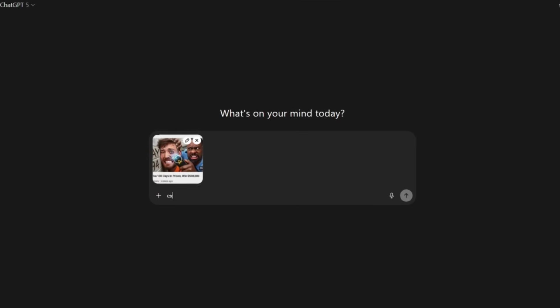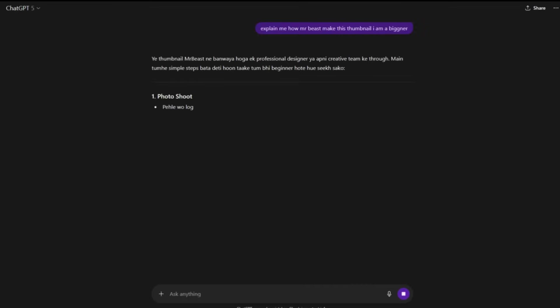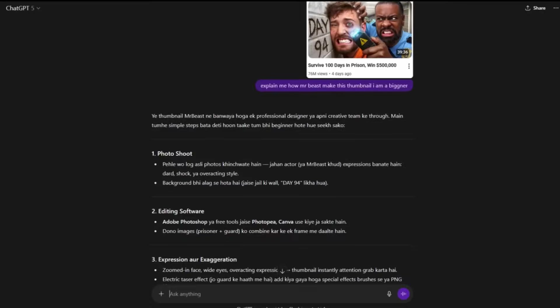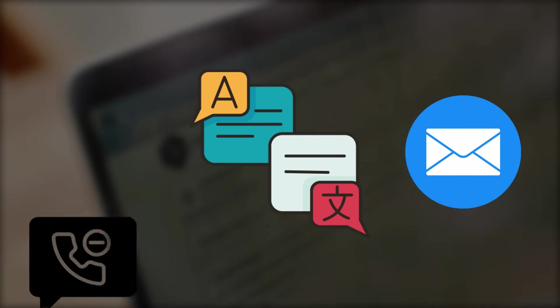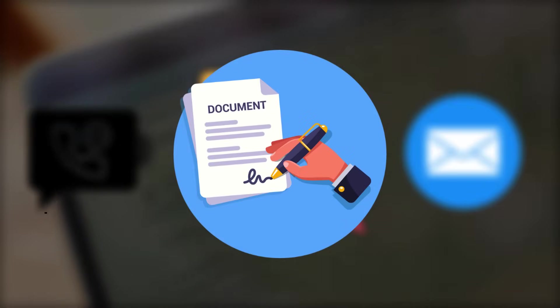For example, take a screenshot and ask ChatGPT to summarize or explain it in simple terms. Use Google Translate AI to instantly translate emails, messages, or documents for work or travel.